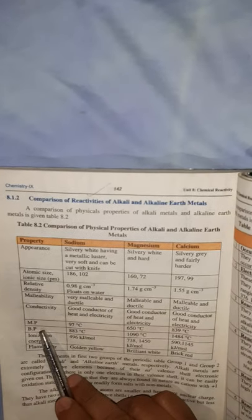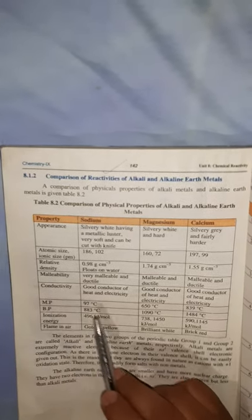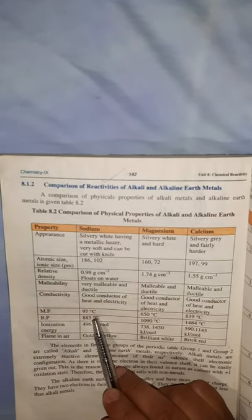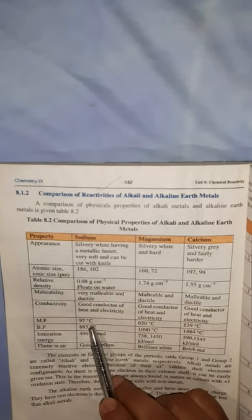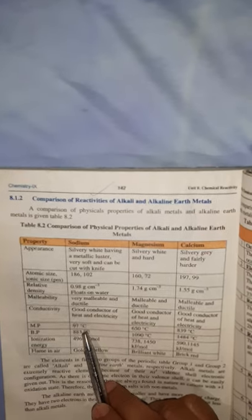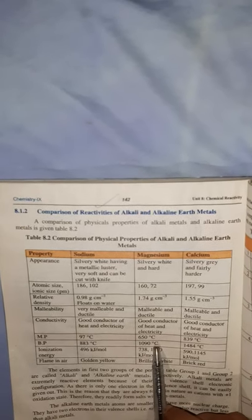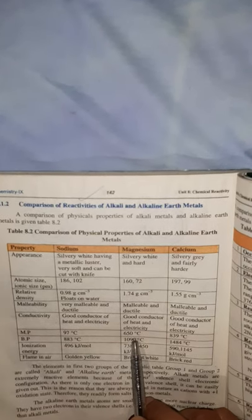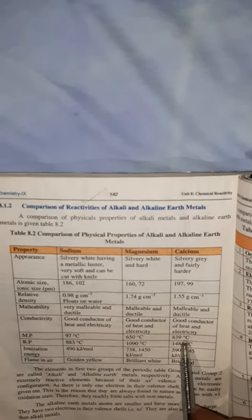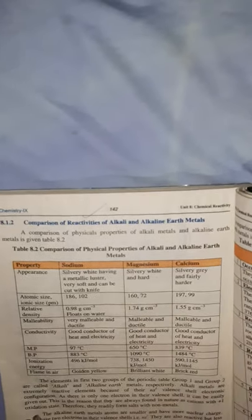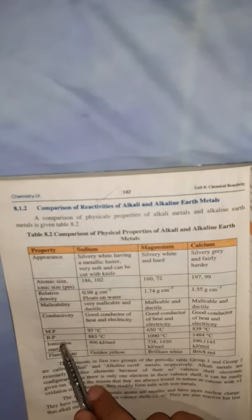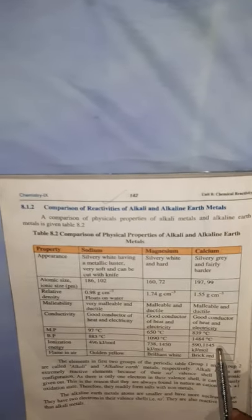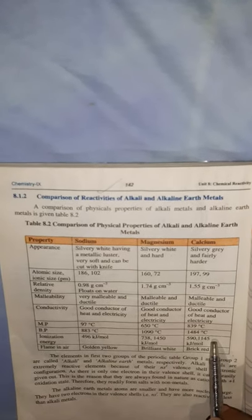For melting point: sodium has a melting point of 97°C due to its soft nature. Magnesium has a melting point of 650°C and calcium has 839°C. Sodium also has a lower boiling point than magnesium and calcium.